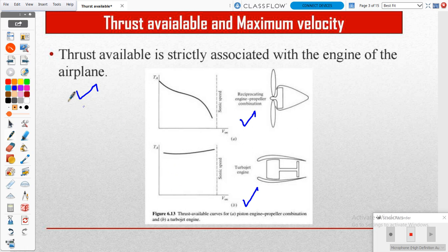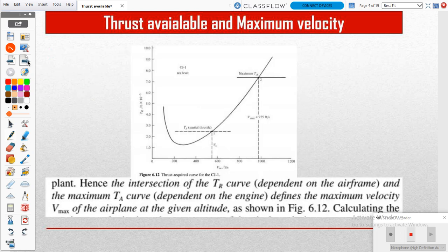This is our comparison between reciprocating engine and turbojet engine. In this curve we can easily estimate V1 as well as V2 - that means minimum velocity and maximum velocity - with the help of velocity versus thrust available.